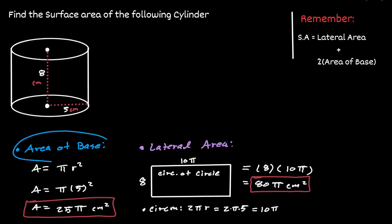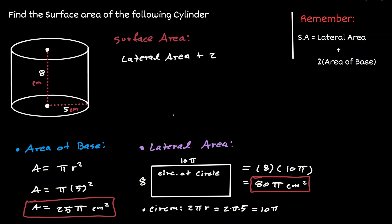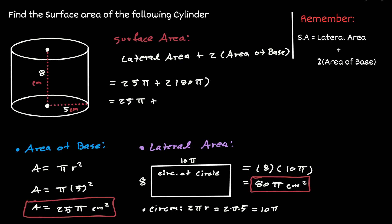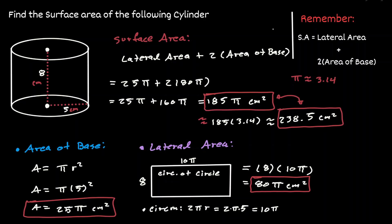Now we have all the information needed. The area of the base is 25π centimeters squared, and the lateral area is 80π centimeters squared. Plugging into the surface area formula: 25π plus 2 times 80π. Simplifying: 2 times 80 is 160, and adding 25π gives us 185π. If we want to approximate in decimals, using π ≈ 3.14, this is approximately 185 times 3.14, which is approximately 581.9 centimeters squared. Either answer is fine — 185π is the exact value, and the decimal is an approximation.